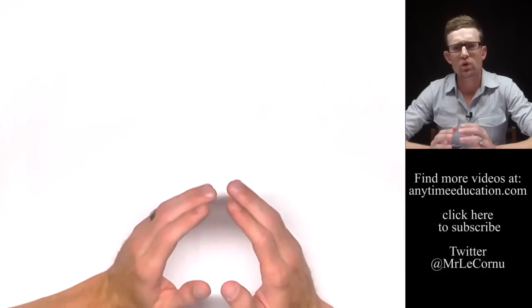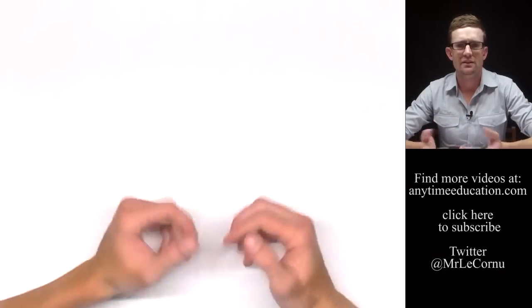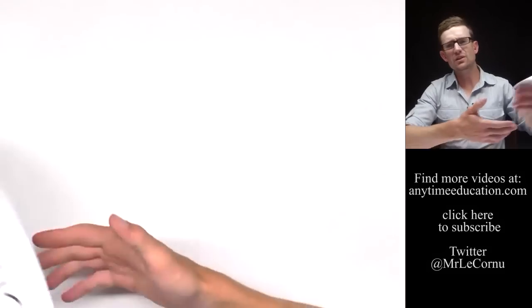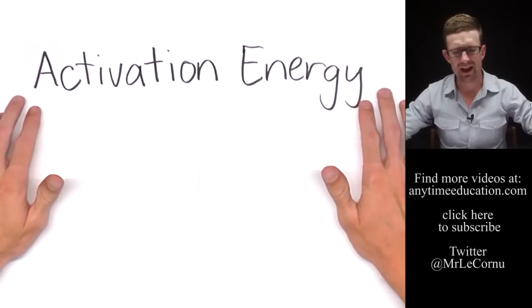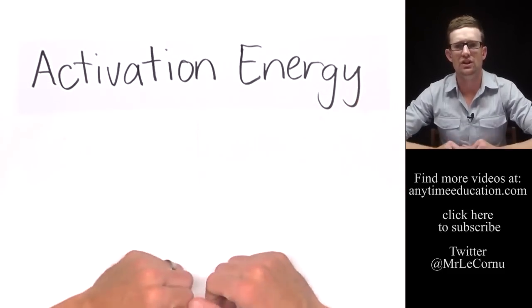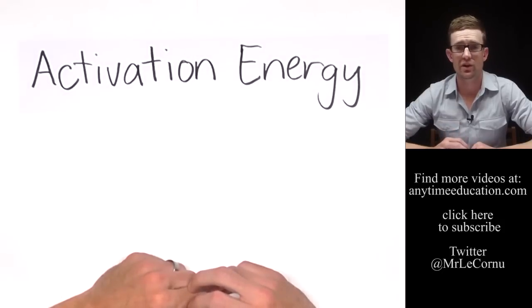So the role of an enzyme is to speed up or catalyze a chemical reaction. And enzymes speed up chemical reactions by lowering the activation energy. That is a key term when we're talking about how enzymes work.